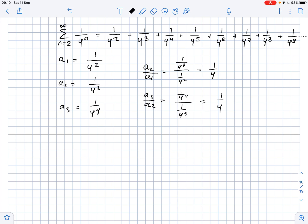So as you can see, the ratio is the same. So that means that our series has a common ratio. So the series is geometric, and this common ratio equals 1 over 4.